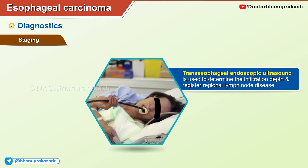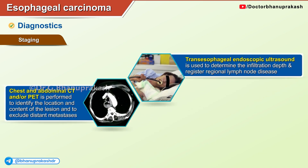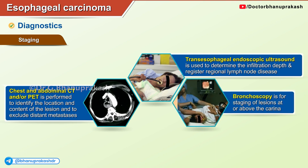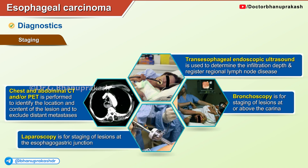Staging: transesophageal endoscopic ultrasound is used to determine infiltration depth and assess regional lymph node disease. Chest and abdominal CT or PET scan is performed to identify the location and extent of the lesion and to exclude distant metastases. Bronchoscopy is used for staging of lesions at or above the carina, and laparoscopy is used for staging of lesions at the esophagogastric junction.